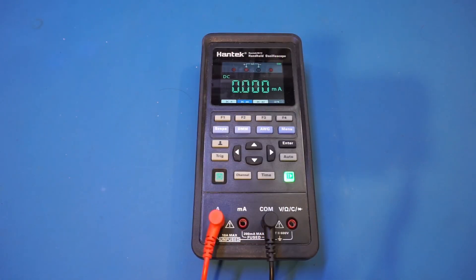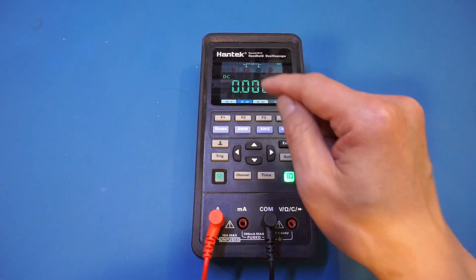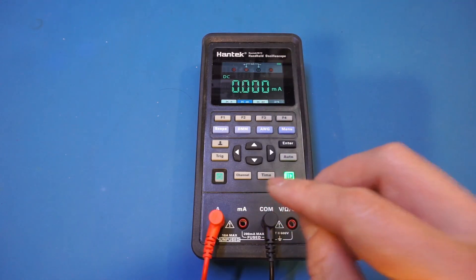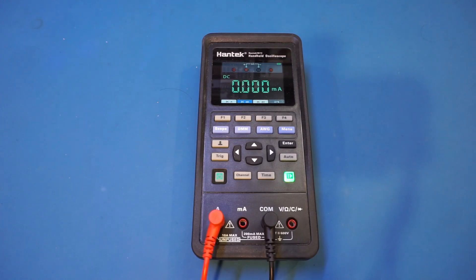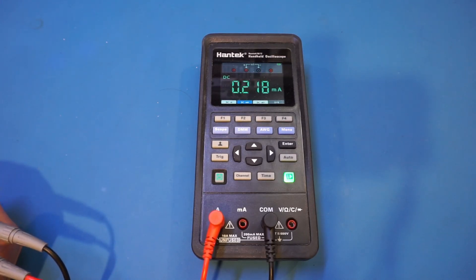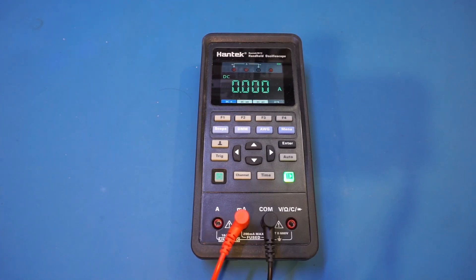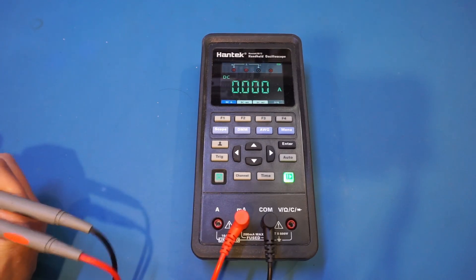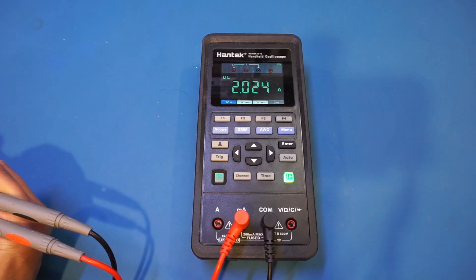And here is the Hentag 2D72. We're currently in milliamp range and the probes are in the amp jack. So let's see what readings are. Nope, wrong reading. Now I have swapped the range and also the input jacks. Let's test it again. Nope, still the wrong reading. This is almost exactly the same thing as we saw in that ET829.